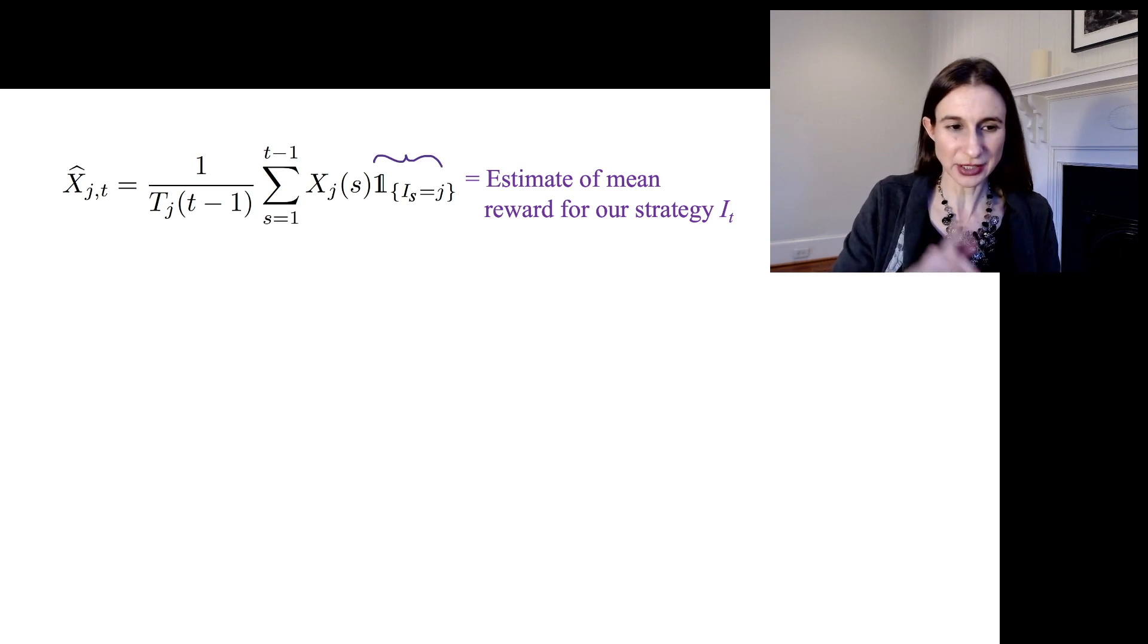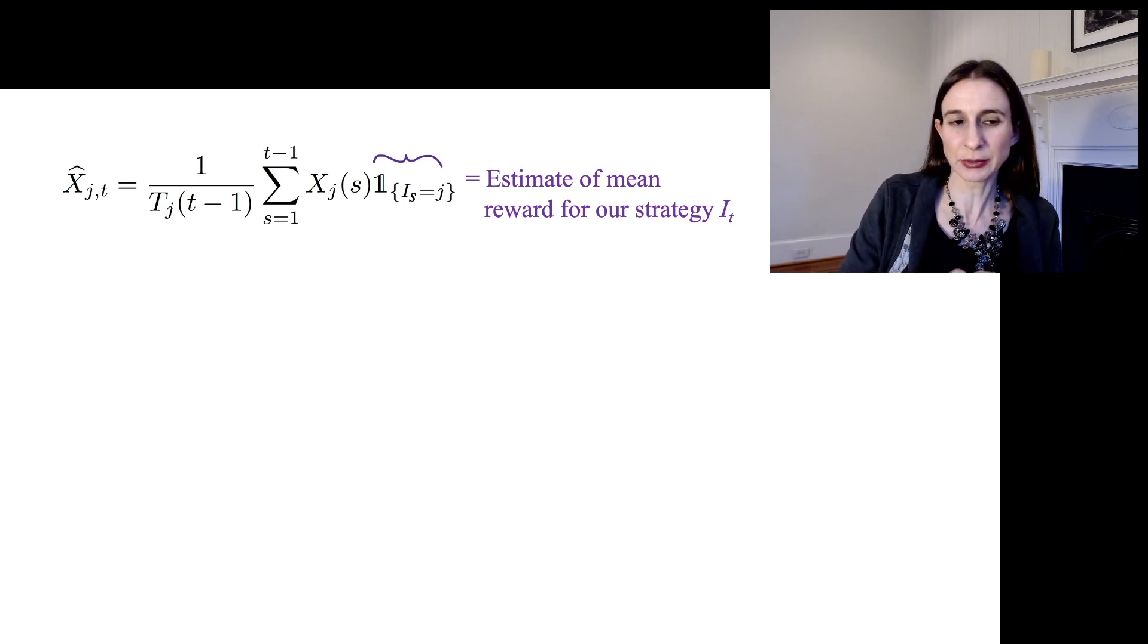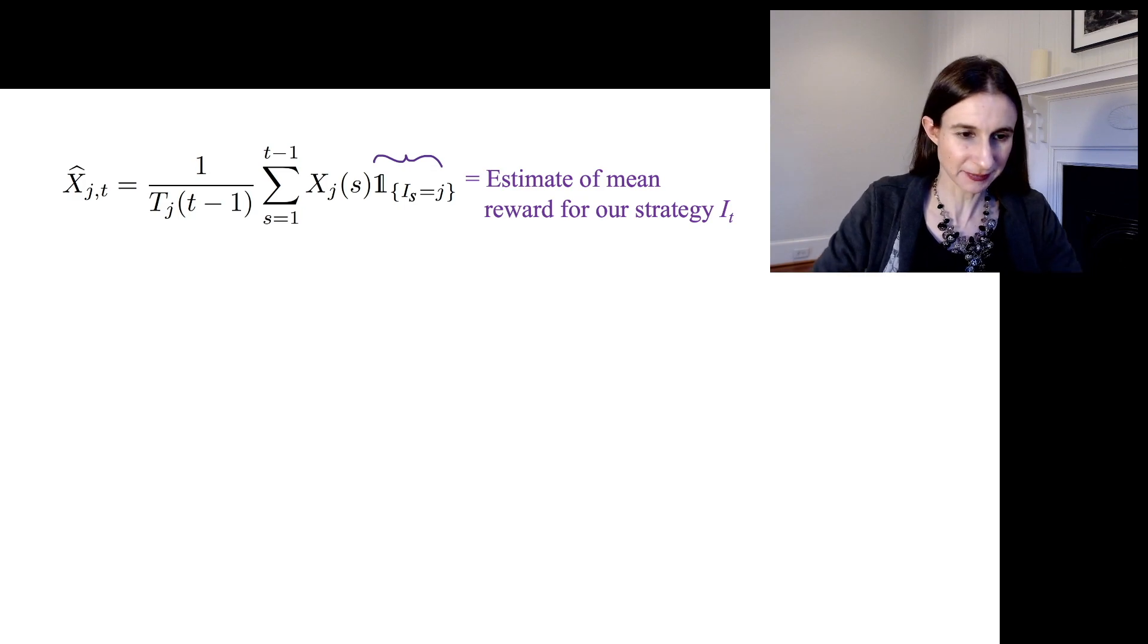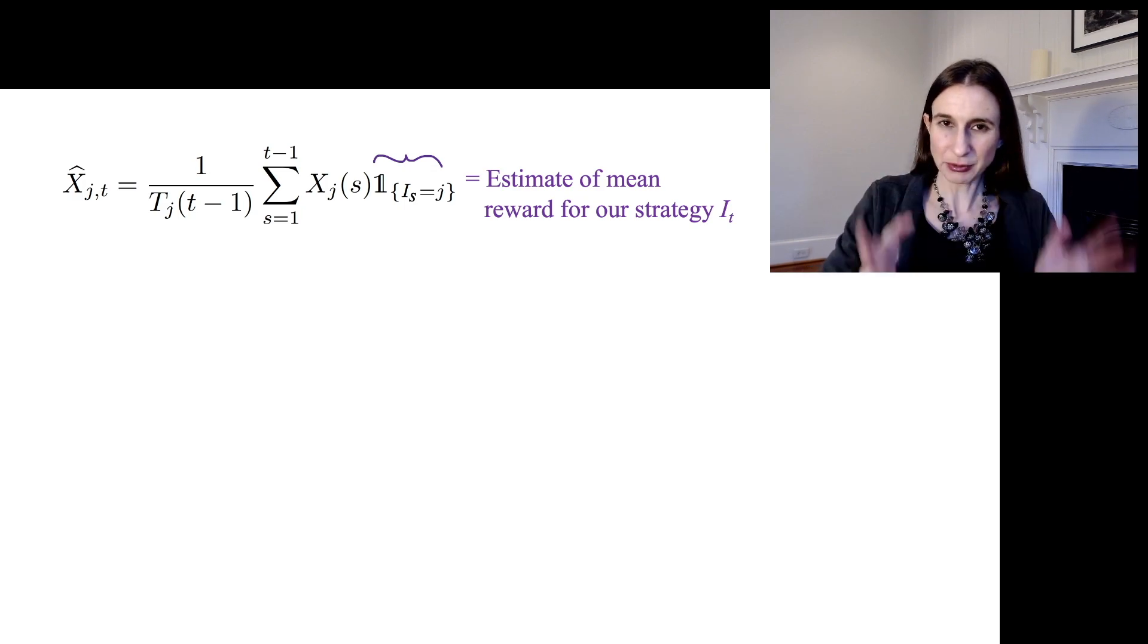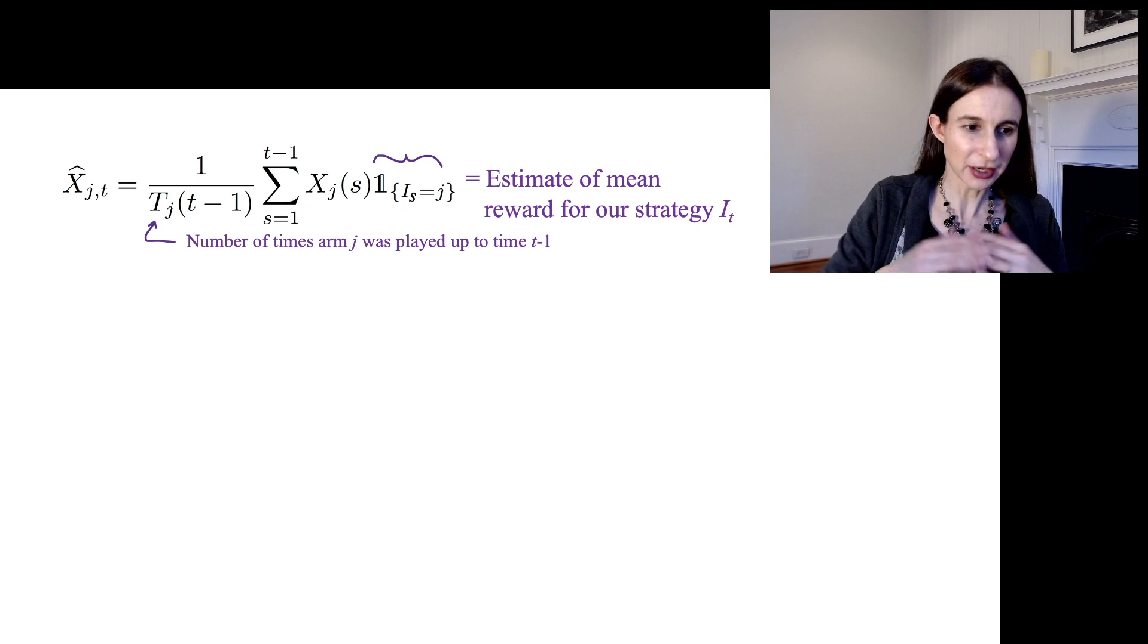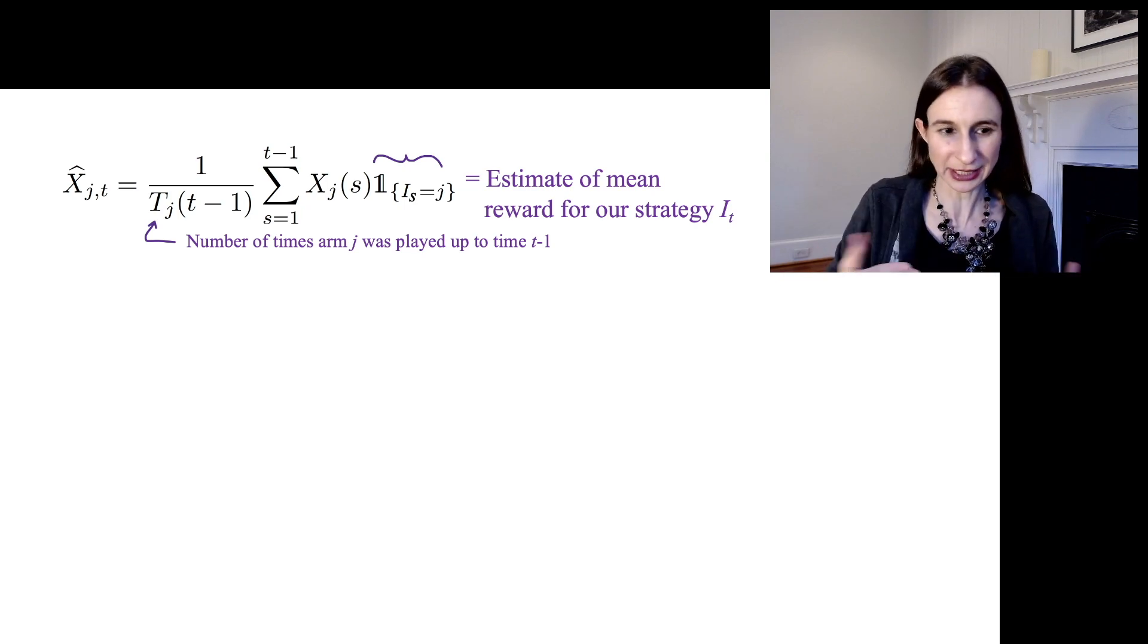This quantity is one if our strategy said we would play arm j at time s. We add up the rewards and then we average them over the number of times arm j was actually played up to time t minus one so that this is a proper average.